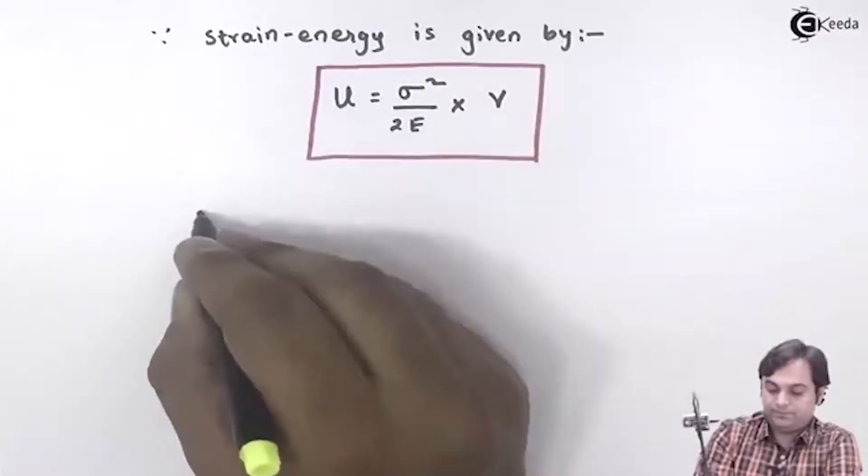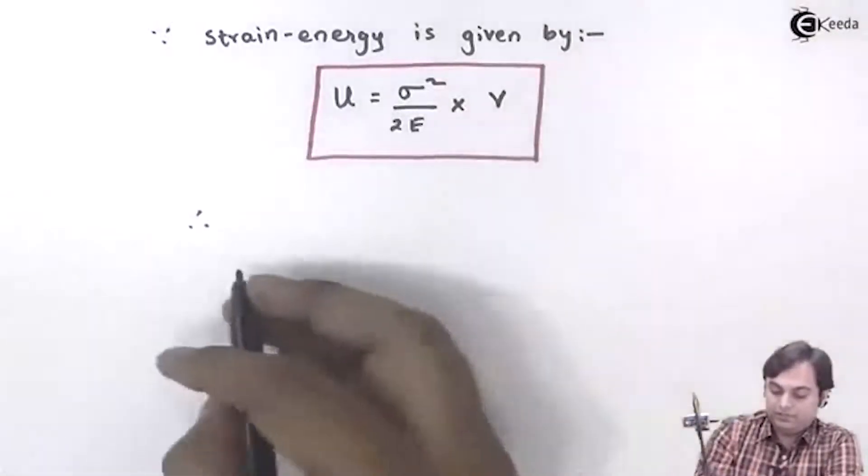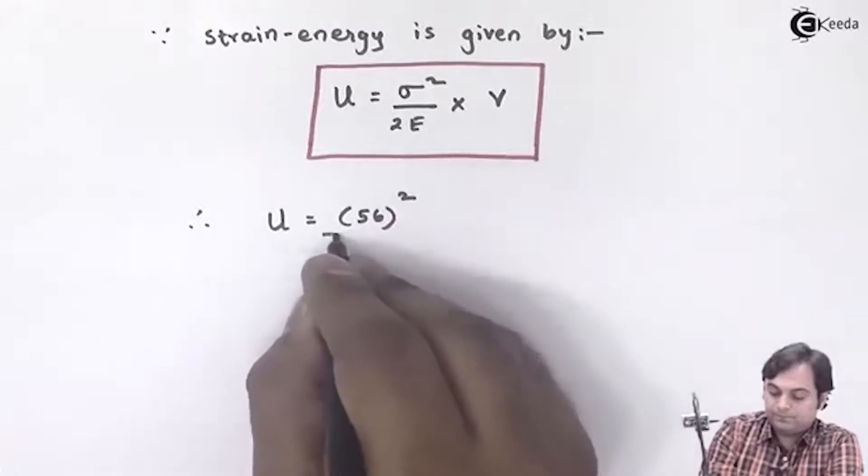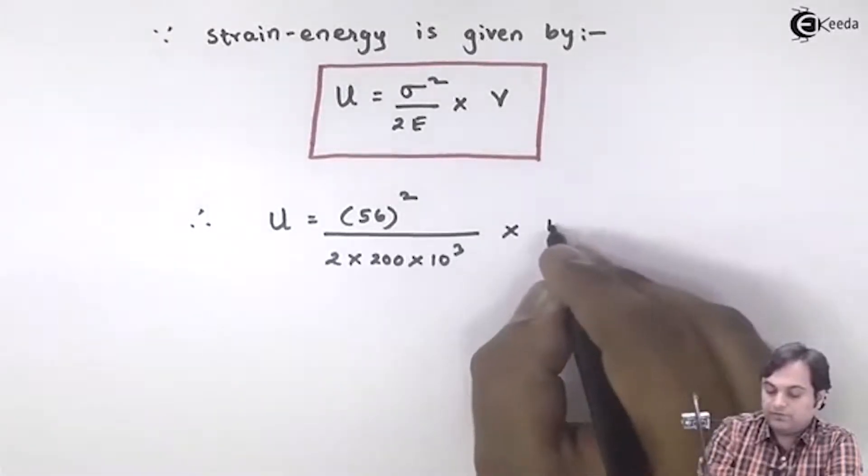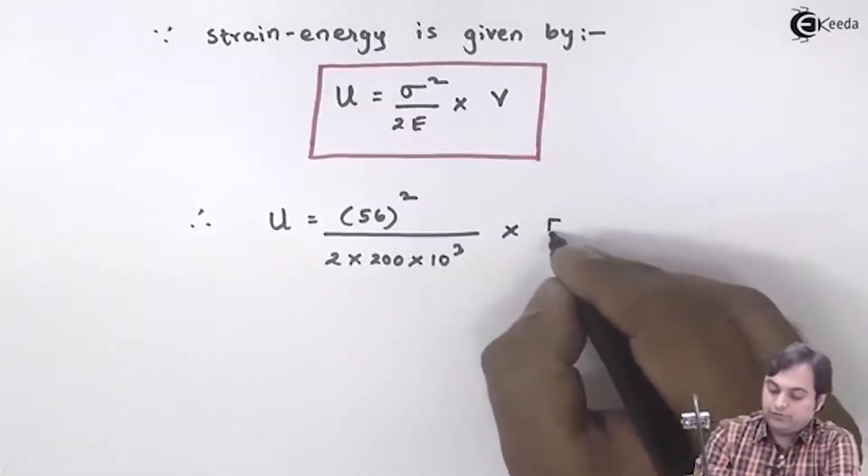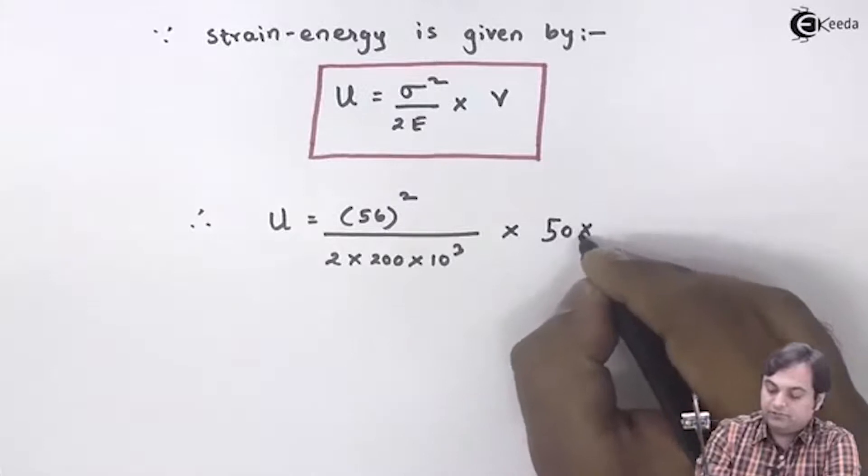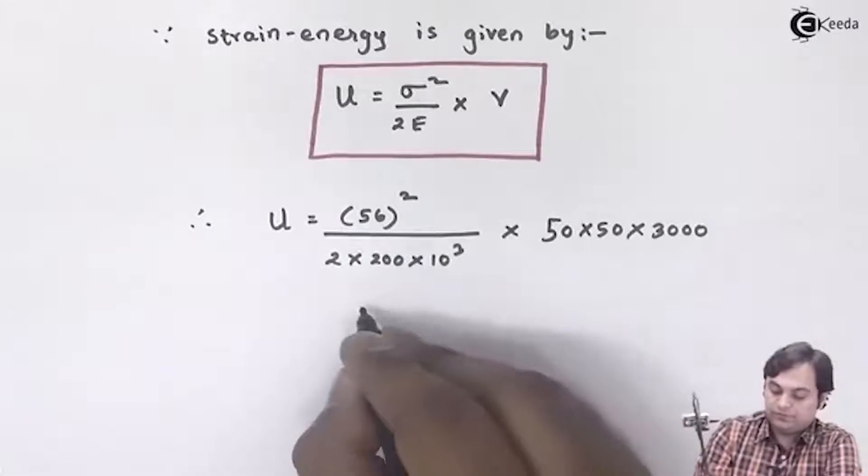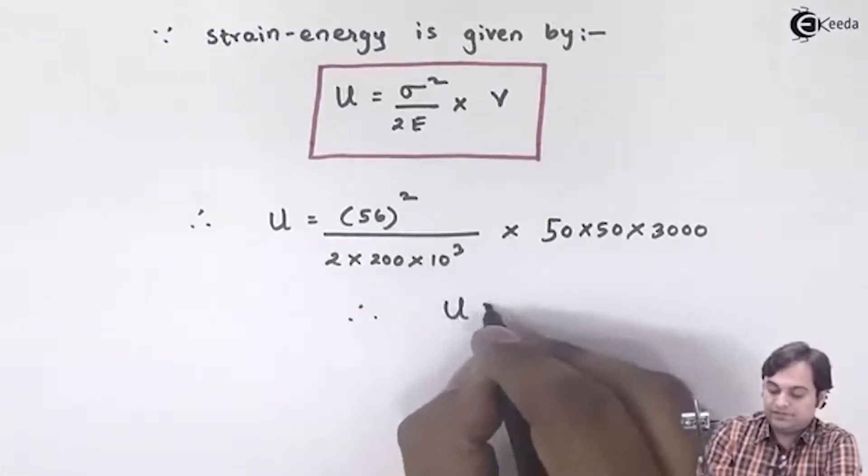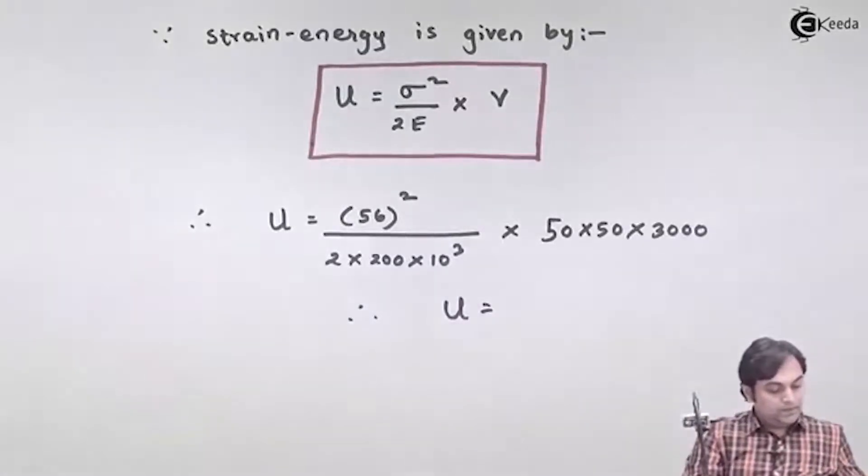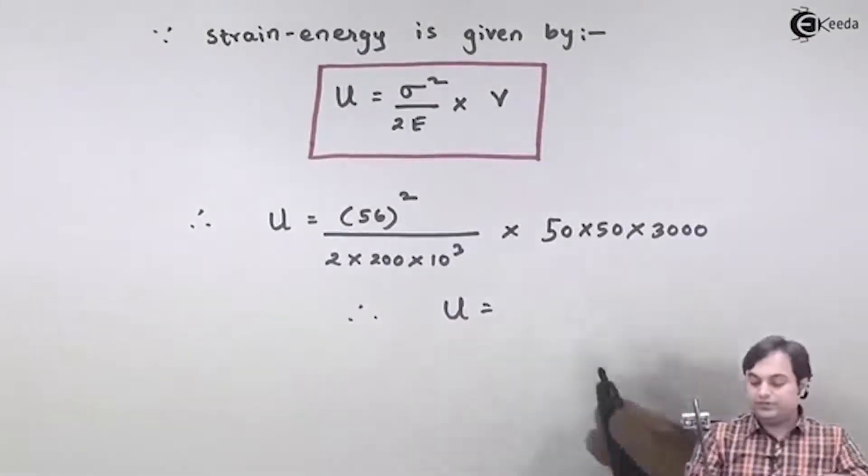So therefore capital U is equal to, σ I have found out it is 56. Volume is, since it is given that here the bar is square in section, so volume will be area, that is 50 × 50 multiplied by length of the bar which is 3000. So from this we will be getting strain energy and the value comes out to be 144 × 10³.